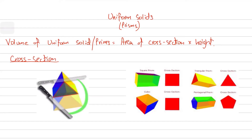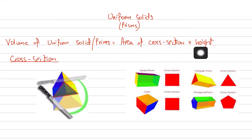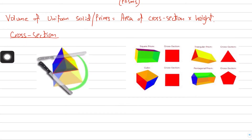In this video we're going to learn more about uniform solids and prisms in particular. Every prism is a uniform solid, but not every uniform solid is a prism — something I will explain later on. The formula for calculating their volume remains the same: area of cross section multiplied by the height.